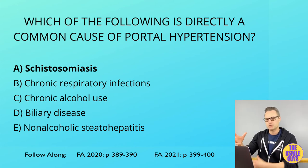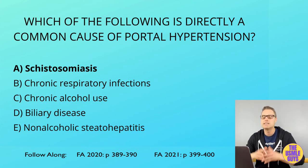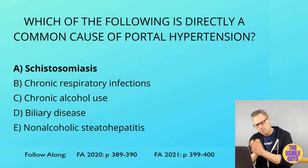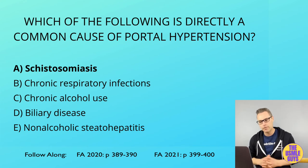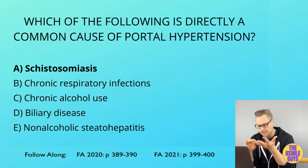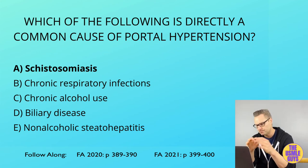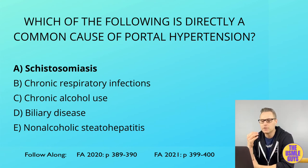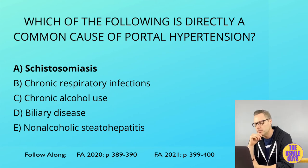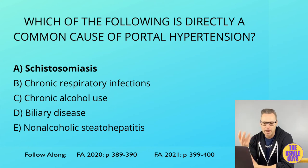Portal hypertension is seen when the pressure within the portal venous system is increased. Cirrhosis is typically the most common cause, but other causes include vascular obstruction or, as this question alluded to, schistosomiasis. The TIPS procedure — which connects the portal vein to the hepatic vein to bypass the liver — can reduce both portal hypertension and its associated complications.